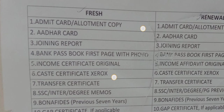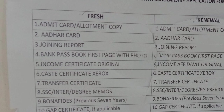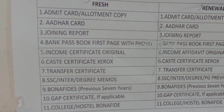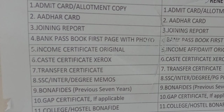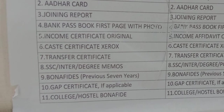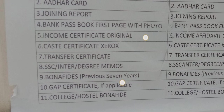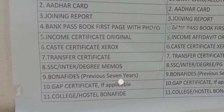And original Income Certificate plus Caste Certificate Xerox. TC, ATC, Degree TC Xerox. And SSE, Inter and Degree Memo — SSE Memo, Inter Memo, Degree Memo. And Bonafides — last seven years you have Bonafides. Gap Certificate — one year gap requires a Gap Certificate.